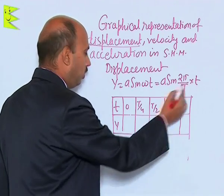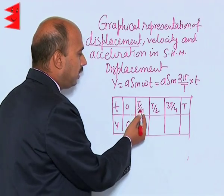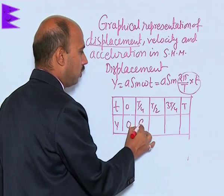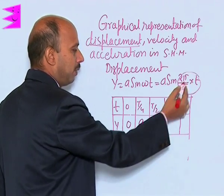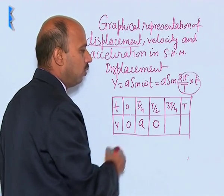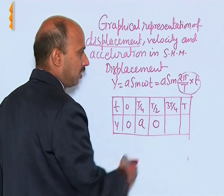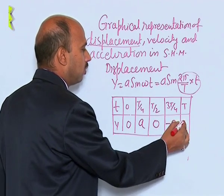If you put t equal to 0, you will be getting 0 because sin 0 is 0. If you are putting t equal to t by 4, it will become pi by 2, that is 90 degree, and it will become equal to a. t by 2 if you are putting, that is equal to pi, sin pi that is again 0. 3 t by 4 you will be getting a sin 270 degree, that is minus 1, that is minus a, and t is equal to again 0.